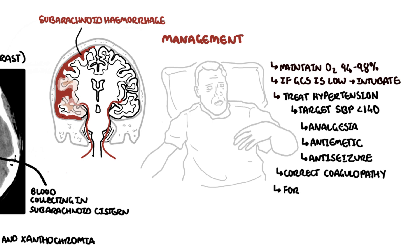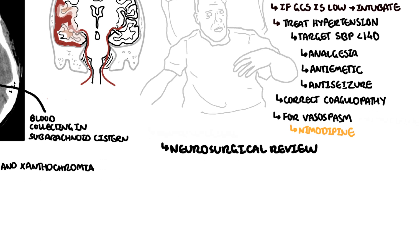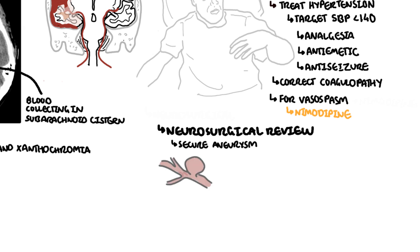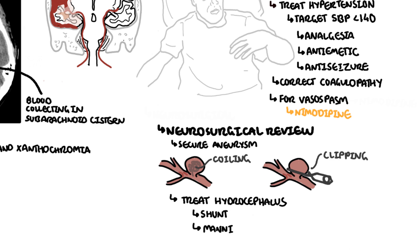Calcium channel blockers such as nimodipine are important to prevent secondary vasospasm. Mannitol intravenously is used if there is evidence of raised intracranial pressure. Most importantly, neurosurgical review should be done early to secure the aneurysmal bleeding through coiling, or clipping if coiling is unavailable. Treat complications such as hydrocephalus through an external or internal shunt, or with intravenous mannitol if a shunt cannot be placed immediately.